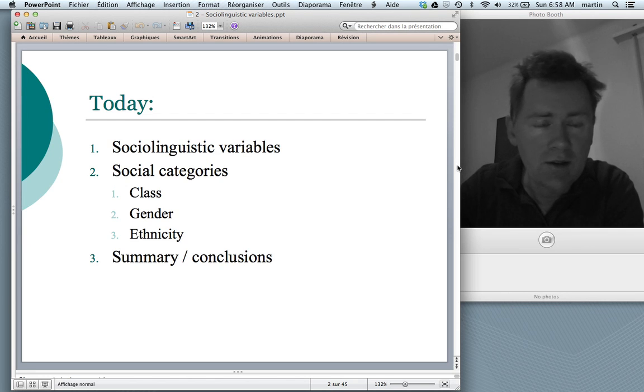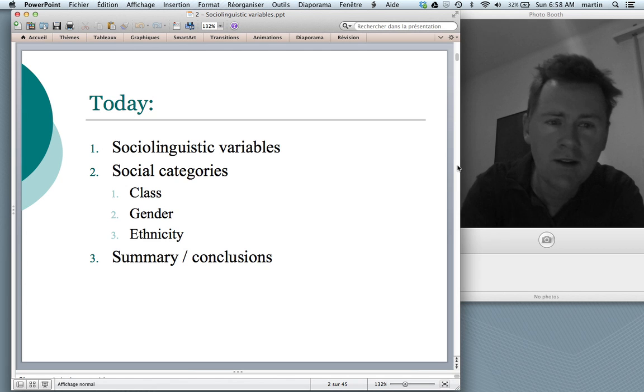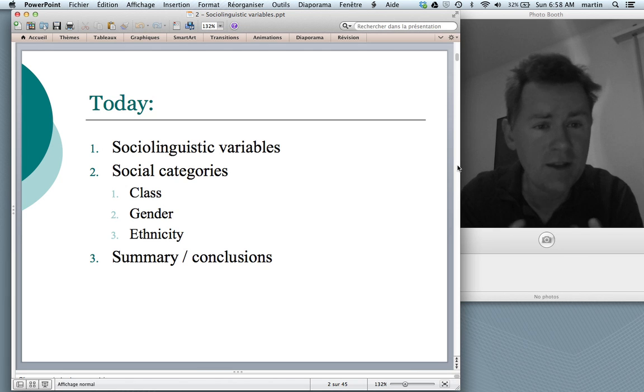First of all I'll talk about sociolinguistic variables and give you a couple of examples, also data examples for that. Then we'll talk about social categories, things like class, gender, ethnicity, and it's important to keep these two apart. Sociolinguistic variables are about ways of talking, and social categories are amongst the factors that explain why people talk in these different ways. Social categories, although they influence language, they are not in themselves linguistic. At the end of the video I'll give you a little summary and present some conclusions.